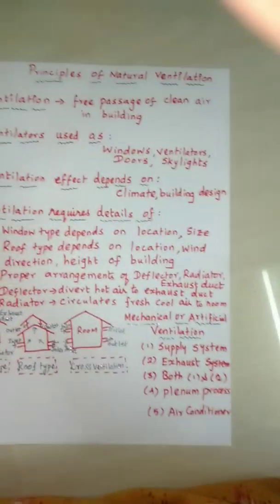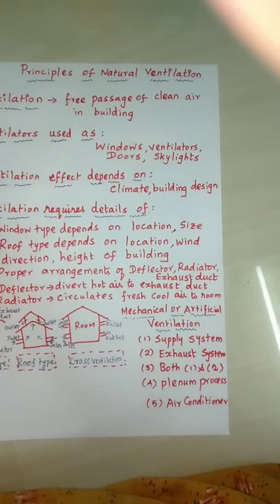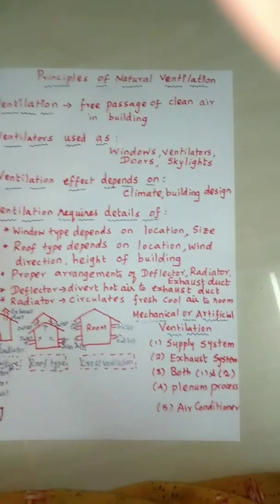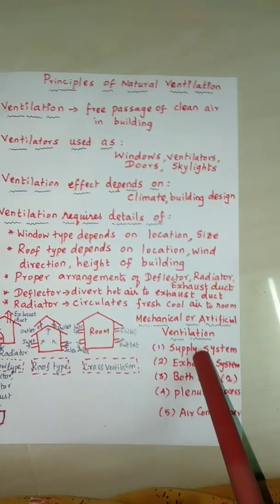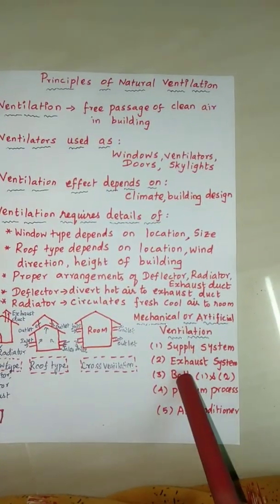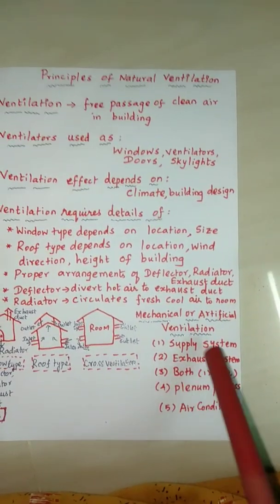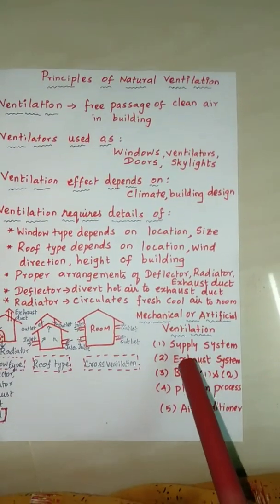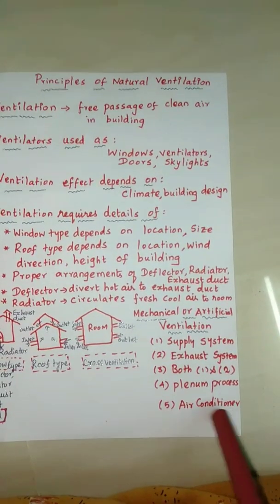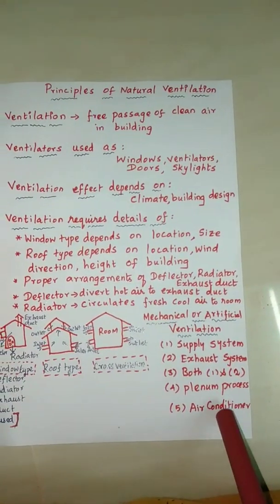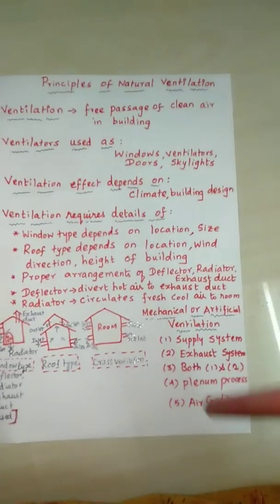Then there is mechanical or artificial ventilation. That means mechanically we have to use some systems. It includes a supply system, an exhaust system, or both together. A plenum means an air blower — we use an external air blower or air conditioner. Air conditioners are what we all use nowadays, and they are easy to understand as a form of artificial ventilation.